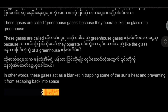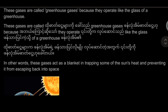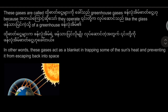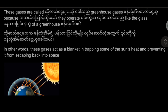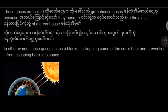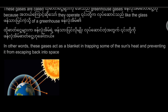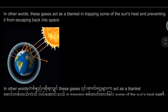These gases are called greenhouse gases because they operate like the glass of a greenhouse. In other words, these gases act as a blanket, trapping some of the sun's heat and preventing it from escaping into space.